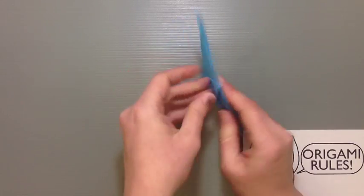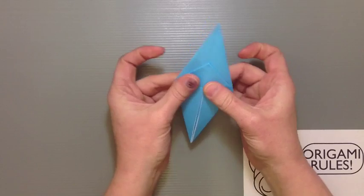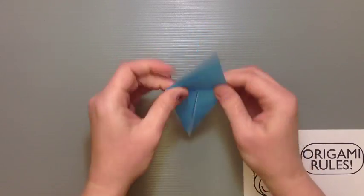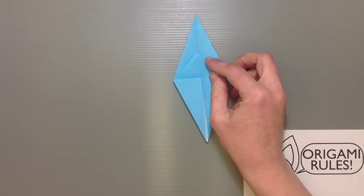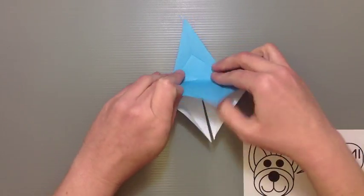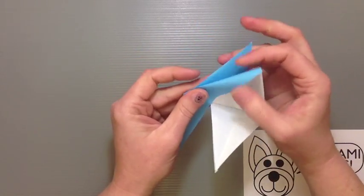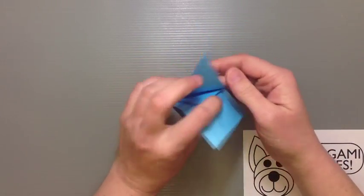Then flip everything over, take the little triangle flap we put here, push it up again. And from here I want to do kind of a similar thing on this side. Open both of these flaps, open this area up, and do a petal fold on this side too.